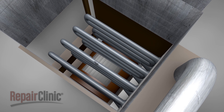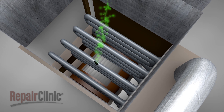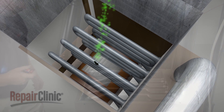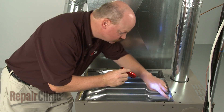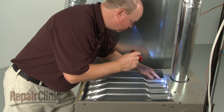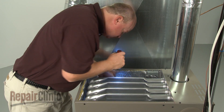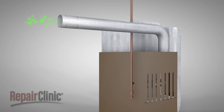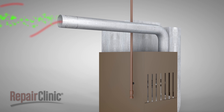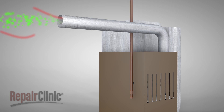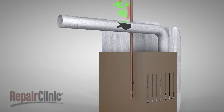Over time, heat exchangers may crack and cause carbon monoxide to leak into the air being circulated throughout the home. Since carbon monoxide poisoning can result in death, we recommend that only experienced professionals repair or replace damaged heat exchangers. Under normal working conditions, the furnace will exhaust the carbon monoxide through a flue or exhaust pipe to the outside of the home. If the flue or pipe breaks, cracks, or rusts, carbon monoxide will contaminate the air.